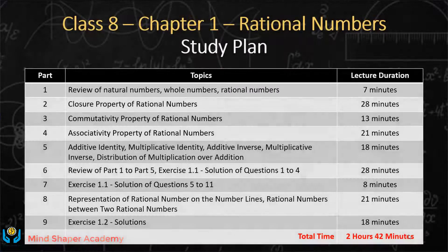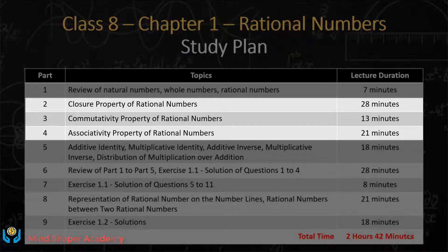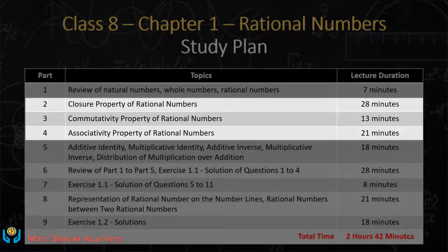In parts 2, 3, and 4, we will talk about 3 different properties of rational numbers: closure property, commutativity property, and associativity property. For integers and whole numbers, you have studied these properties in previous classes, but here we will study how these properties are applicable to rational numbers.